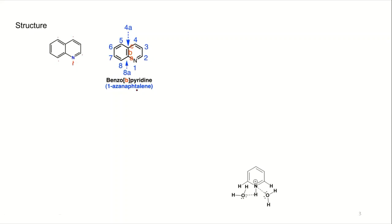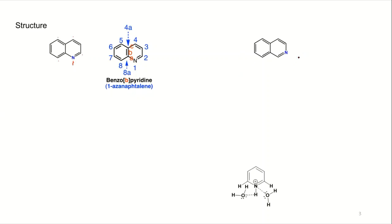Similarly, you have isoquinoline. Here the nitrogen is at the second position, nearby the junction. When you give the numbering, you have to take the junction carbon as position one — you don't take nitrogen as position one. The overall numbering starts nearby the junction point, which has four points.